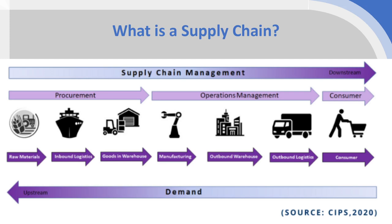The start of a supply chain will be with the ultimate raw materials. If we think about something like a can of Coke, the raw materials will be the aluminium that makes up the can, as well as the water, the flavorings, the sugar — all of the ultimate raw ingredients and raw materials.